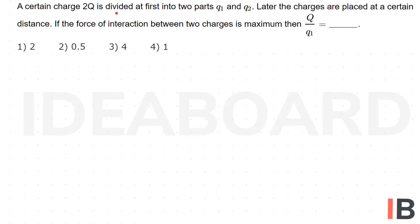A certain charge 2q is divided at first into two parts q1 and q2. Later the charges are placed at a certain distance. If the force of interaction between the two charges is maximum, then q by q1 is equal to what?